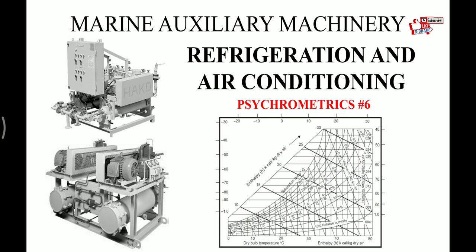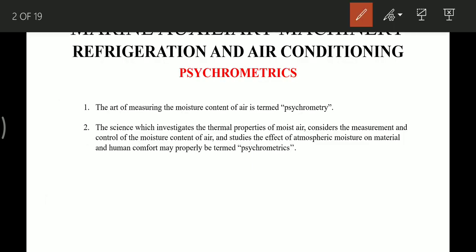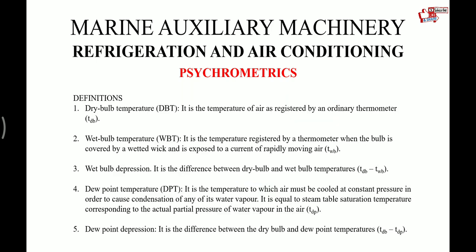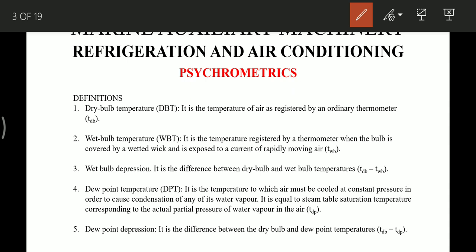In this video we will see psychrometrics and the psychrometric chart. This is very important before we go on to the air handling unit of the AC plant, because until we understand the psychrometric processes, we won't be able to understand the air handling unit's construction and operation. The art of measuring moisture content of the air is called psychrometry, and the science which investigates the thermal properties of moist air, considers the measurement and control of moisture content of air, and studies the effect of atmospheric moisture on materials and human comfort, is termed psychrometrics.